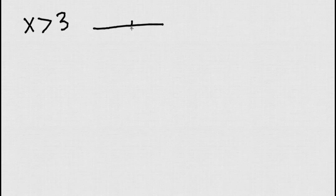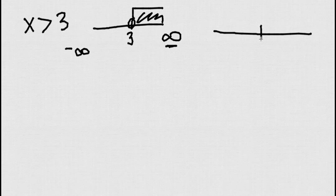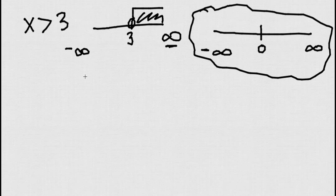Let's say that they tell me x greater than 3. Remember, when we graph it, we say this was 3 and then open circle to the right. The positive infinitive is to the right and the negative infinitive is to the left. Anytime you have the number line, you have the zero, and then you have the positive infinitive and the negative infinitive. When I want x greater than 3, I just do parenthesis, 3, comma, infinitive — and I always use parenthesis for the infinitive. Always. So this is how you do this example.